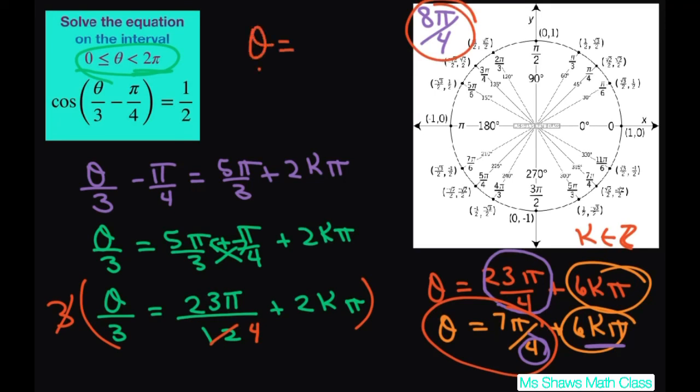So my angle is 7π divided by 4. It's the only thing that's going to work. When you plug it into that angle, divide by 3, subtract π over 4, that will give you the 1 half value. Thank you, have a nice day. Bye bye.